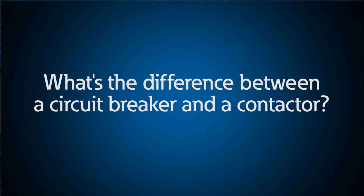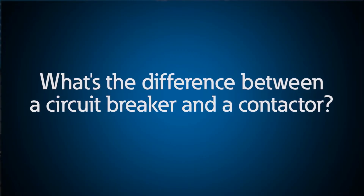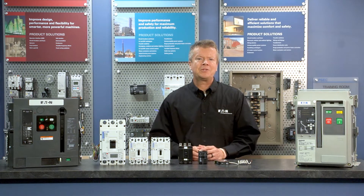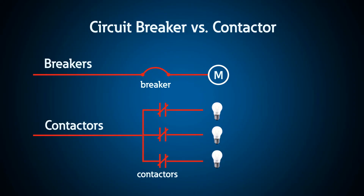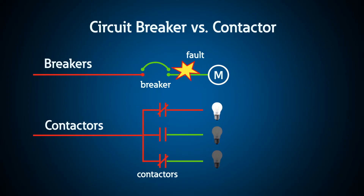Generally when you think of switching power circuits you may think of circuit breakers or contactors. So what's the difference? In general, a circuit breaker's primary function is to interrupt circuits during fault conditions or overload situations. A contactor is primarily used to turn on and off loads or control equipment. While breakers are designed to interrupt fault current, a contactor can trip during an overload condition, but if you tried to interrupt a fault with a contactor you would likely weld or damage the contacts.